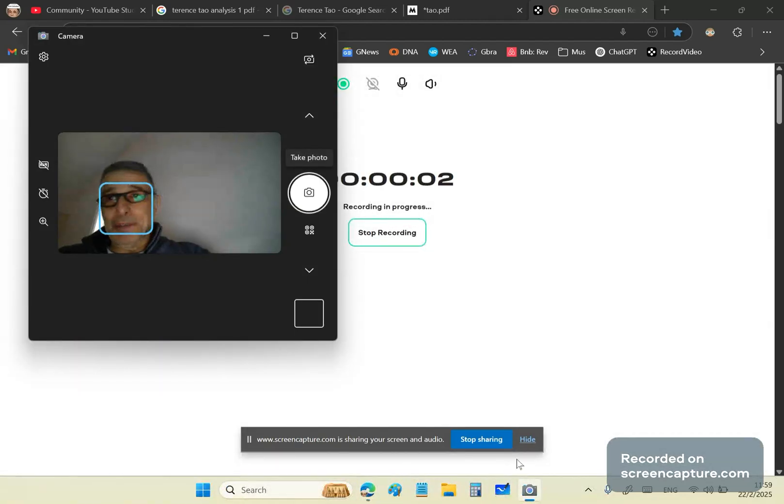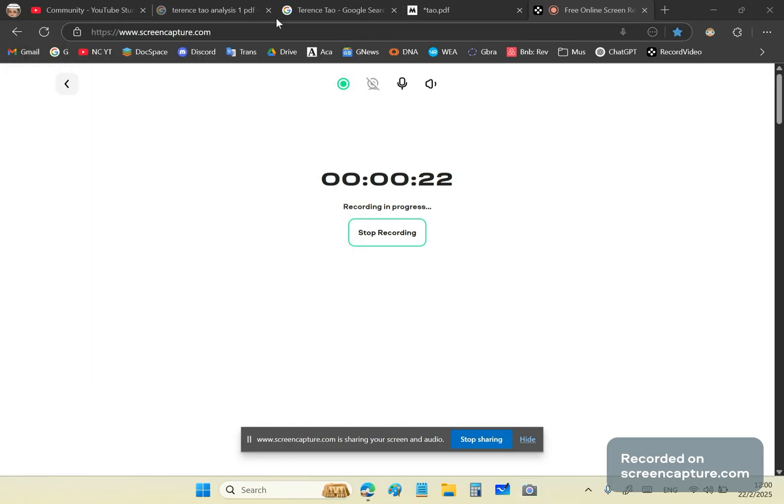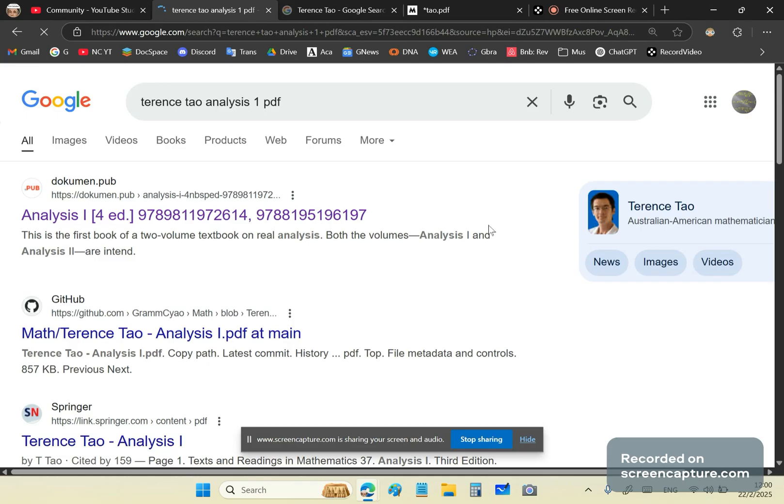Greetings and welcome once again to my new calculus channel. My name is John Gabriel. Today I'll be talking about a mainstream academic who is actually a Fields Medal winner. Yes, you heard that correctly. Fields Medal winner, but he is as dumb as they get. Can you guess who it is? Well, let me give you a clue. It's this guy here. It's somebody called Terence Tao.